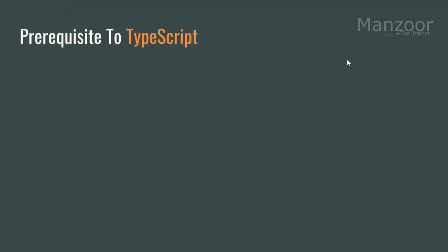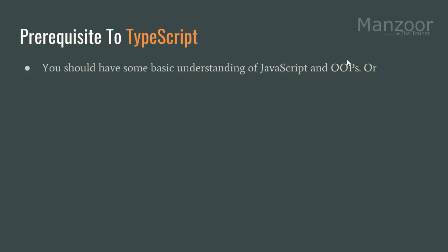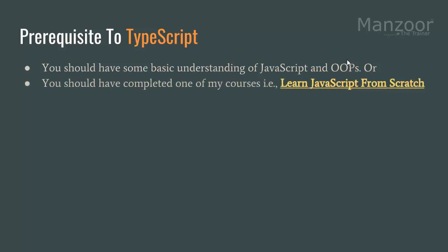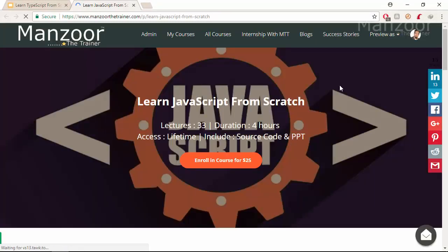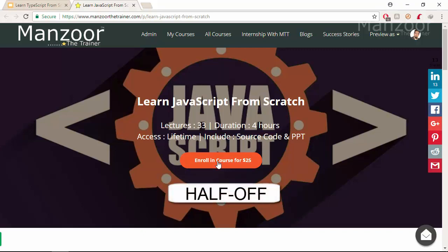The prerequisite for this course is OOP — that means you should have a basic understanding of object-oriented programming concepts, or you should have worked on object-oriented programming concepts in JavaScript. If not, no worries — you can simply enroll in one of my courses, Learn JavaScript from Scratch. I always run some kind of offers; currently I am running a 50% off offer. You can enroll and use the coupon code HALF-OFF. You can also reach me if any offer is running and I can tell you about it.